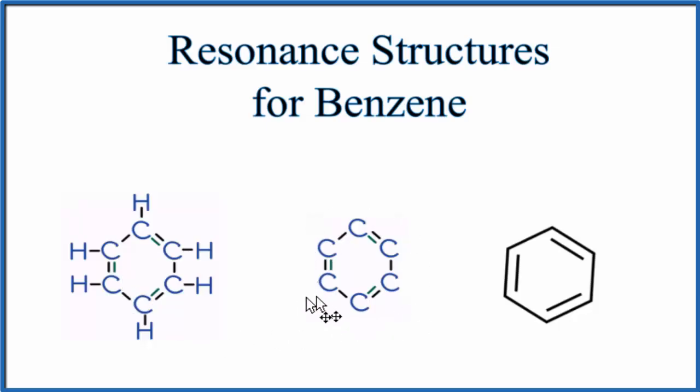Sometimes you'll see it drawn without the hydrogens. In organic chemistry, we often leave the hydrogens off because we know they're there. Carbon will have four bonds. Sometimes we even write it like this, where we don't even show the carbons.